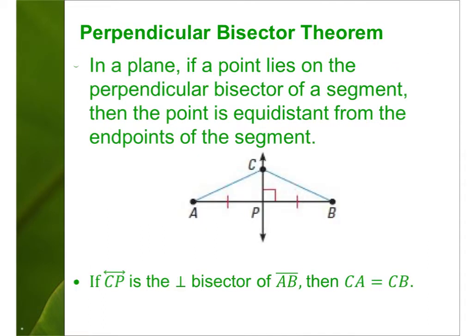Perpendicular bisector theorem: in a plane, if a point lies on the perpendicular bisector of a segment, then the point is equidistant from the endpoints of the segment. CP is our perpendicular bisector of AB — AB is cut in half by CP, and it creates a 90-degree angle where it intersects. So AC is always going to be congruent to CB — you've basically created an isosceles triangle.